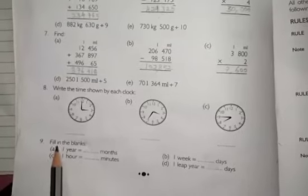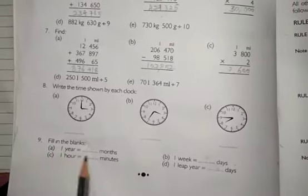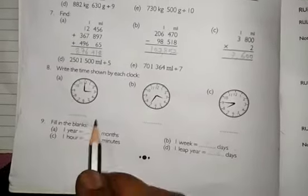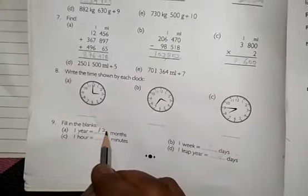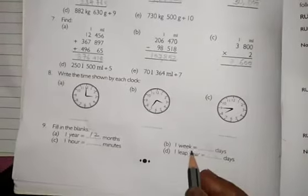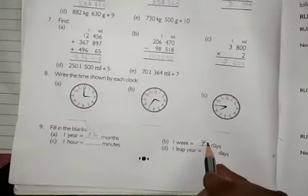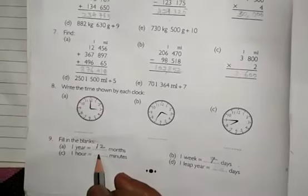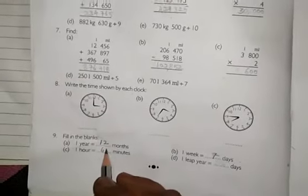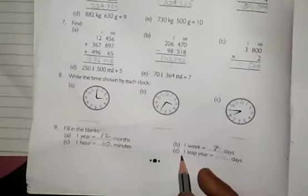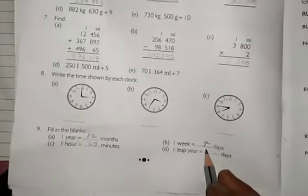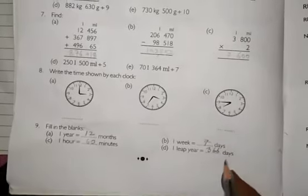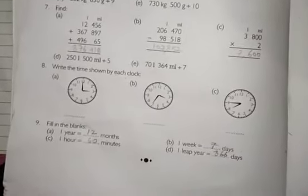Question number 9. Fill in the blanks. Read and fill here. A. One year is equal to 12 months. B. One week is equal to 7 days. C. One hour is equal to 60 minutes. Number D. One leap year is equal to 366 days. Okay. You do all these.